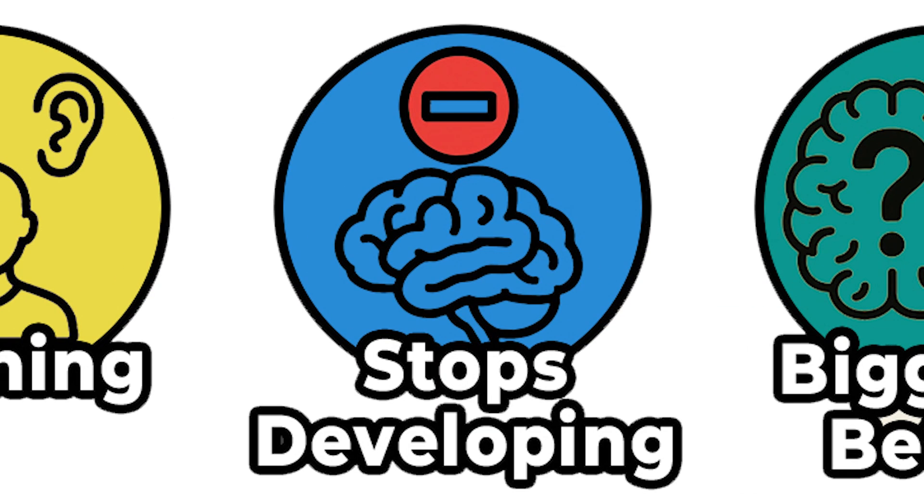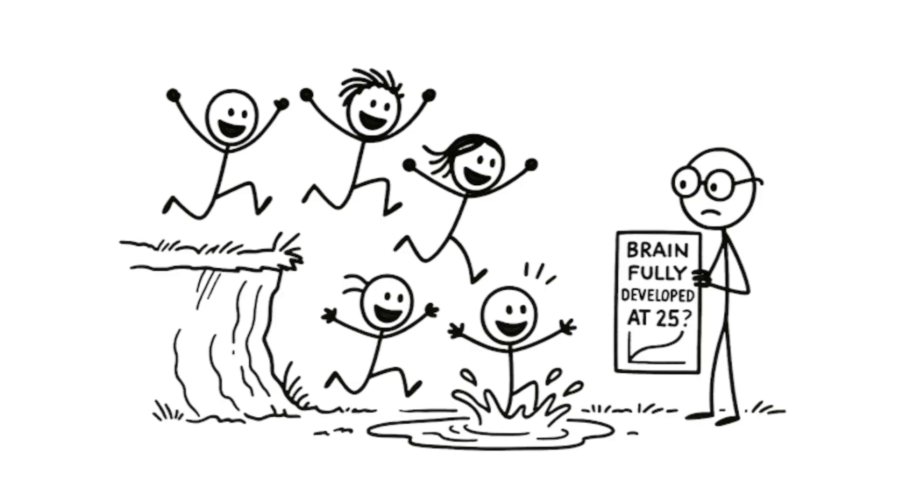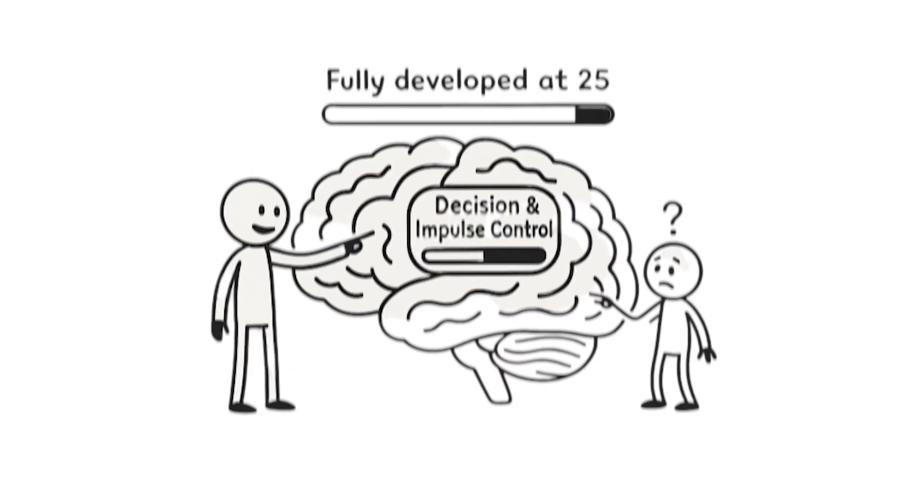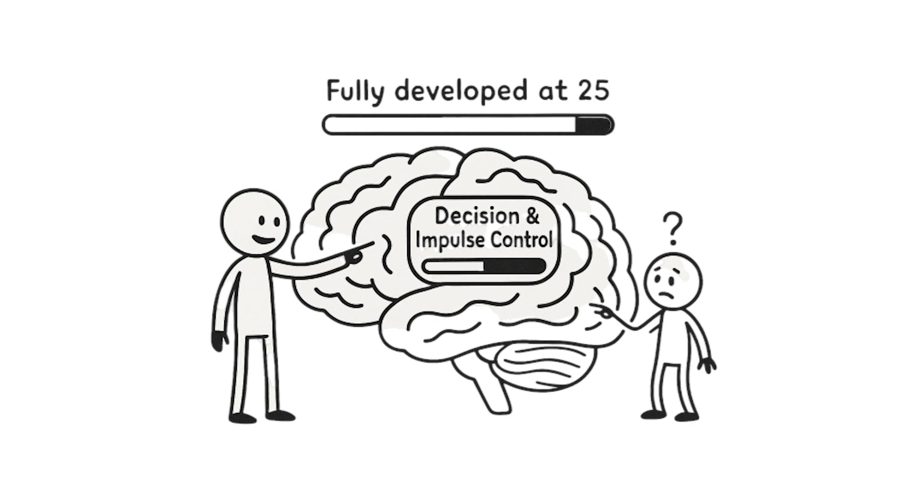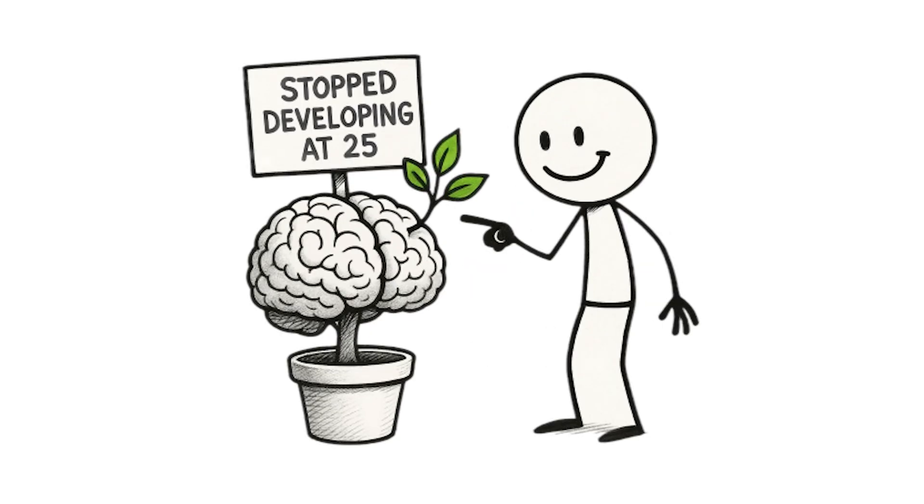After age 25, your brain stops developing. This one gets thrown around a lot, especially when talking about why young adults make questionable decisions. Yes, the front part of your brain responsible for decision-making and impulse control finishes developing around 25. But that doesn't mean your brain just stops growing.